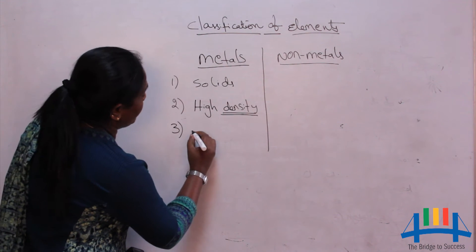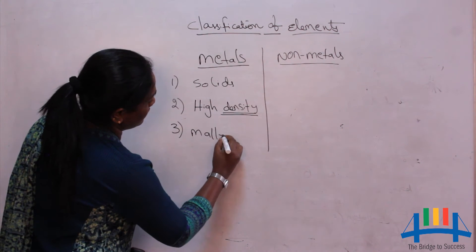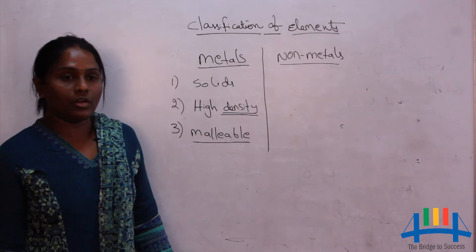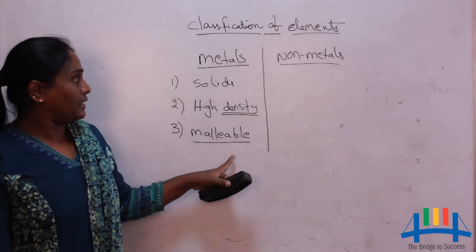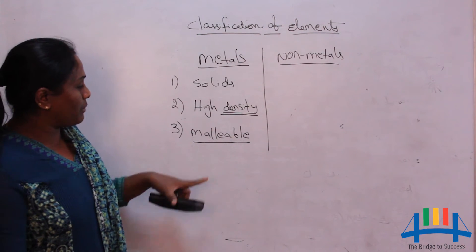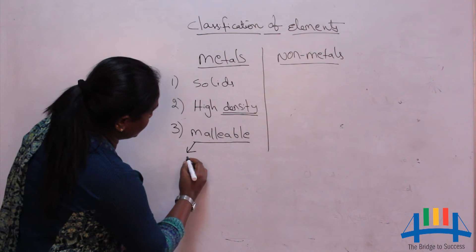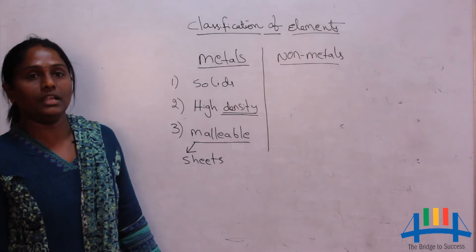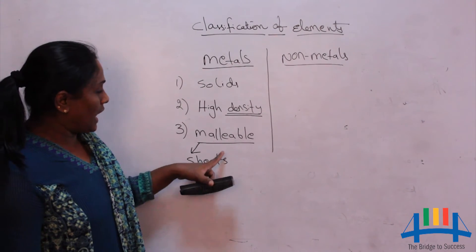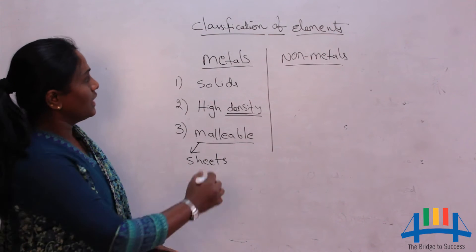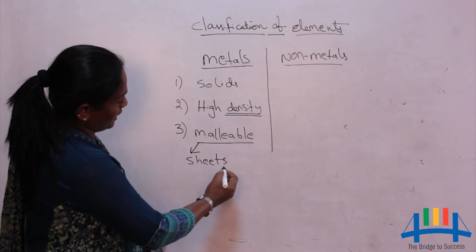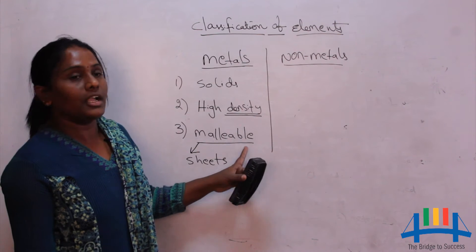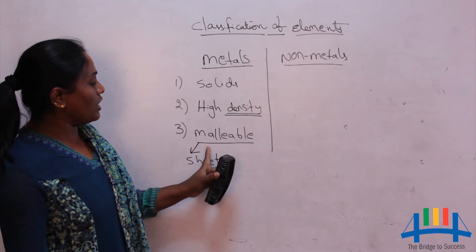Metals are also malleable. Malleability means metals or elements which can be beaten or converted into sheets. For example, we can see silver foil and gold foil — these are made up of metals, meaning metals can be converted into the form of sheets. That property is called malleability, and such metals are called malleable metals.